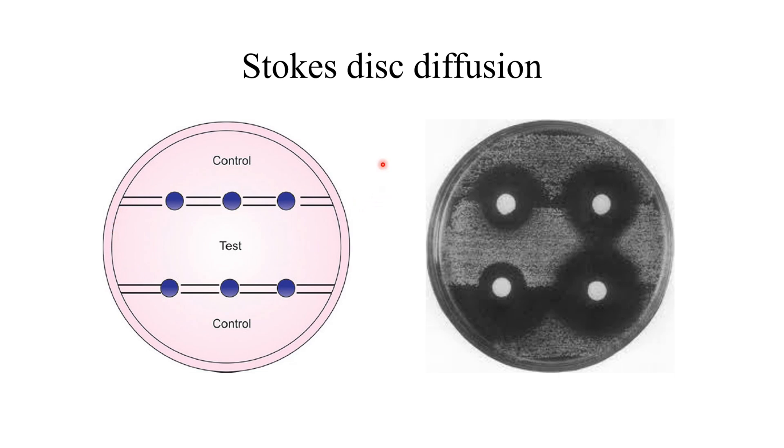After that, we will keep the antibiotic discs in between these two portions like that. That means after incubation, we will get the result like this and after incubation, we will compare the zone diameter of control to the test. While comparing the zone diameter, you will get an idea about whether the organism is resistant or sensitive to a particular drug.